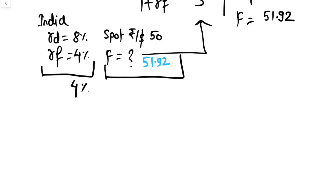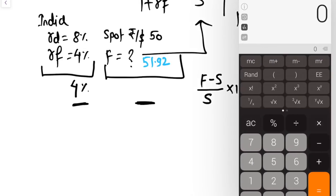We have to take out the percentage. So how do we take out the premium? Appreciation and depreciation: forward rate minus spot rate divided by spot rate into 100. So 51.92 minus 50 divided by 50. Let's do the calculation. You can see that 3.84, right?